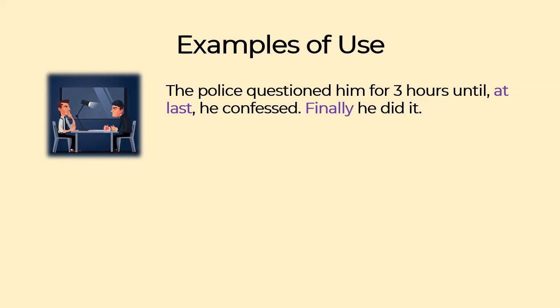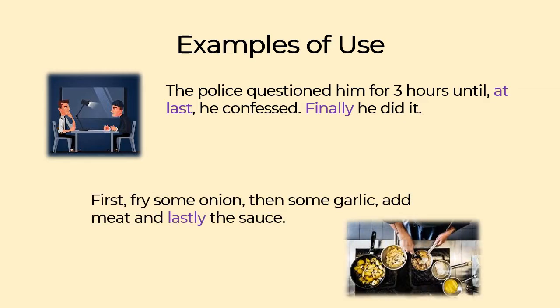Example 2: First fry some onion, then some garlic, add meat, and lastly the sauce. The sauce is the last ingredient you should use.